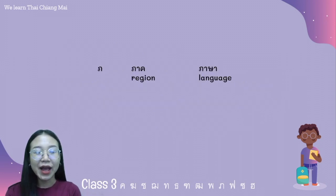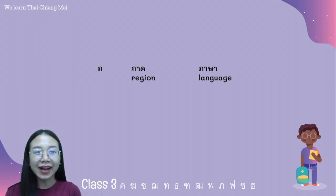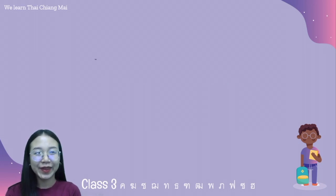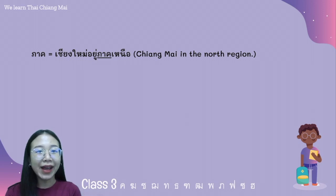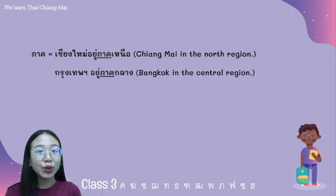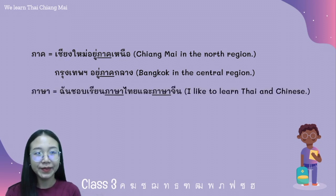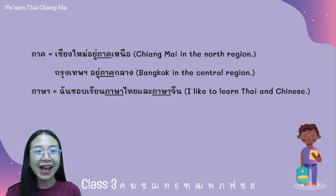And next, พอพาน — we have two words. The first word is พาก, and the word พาสา. For example, ฉันชอบเรียนภาษาไทย และภาษาจีน.